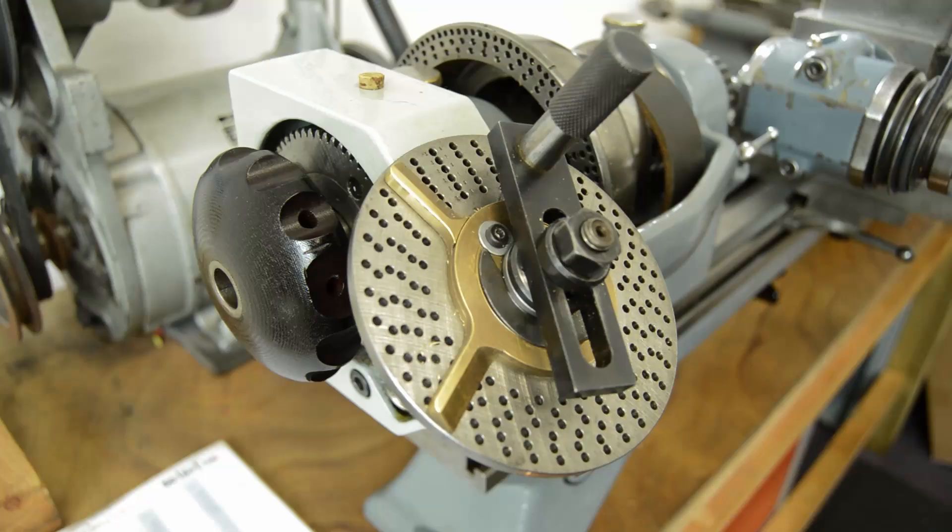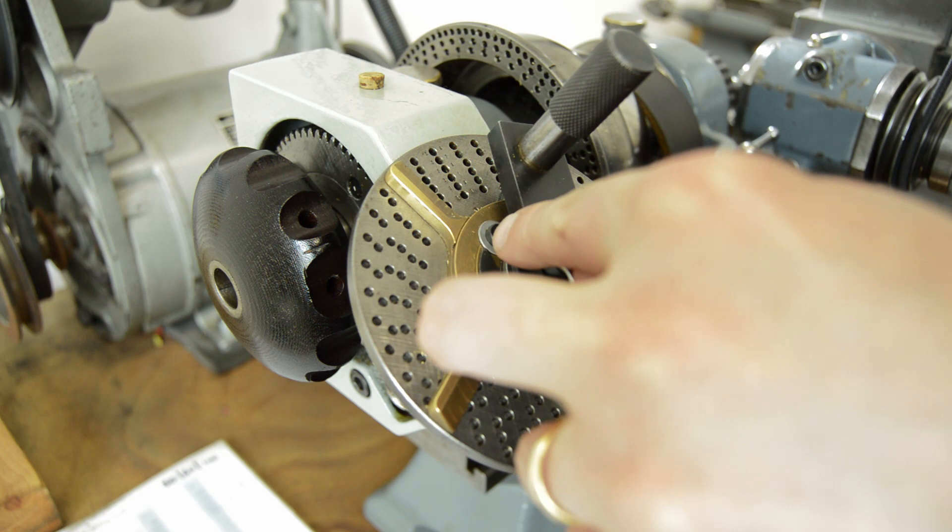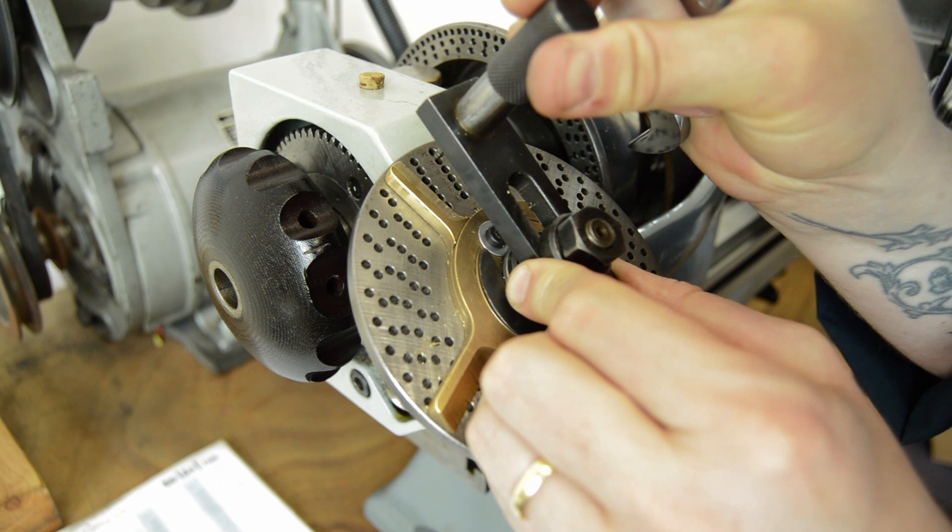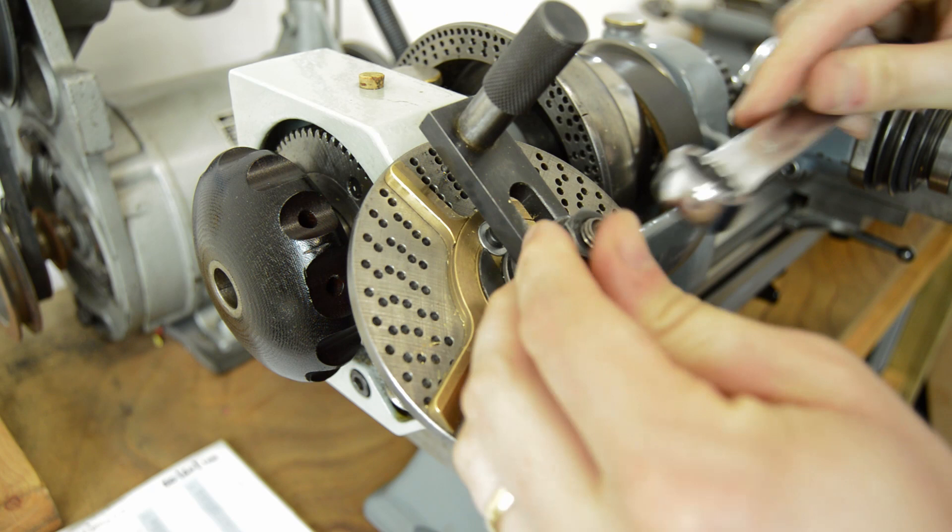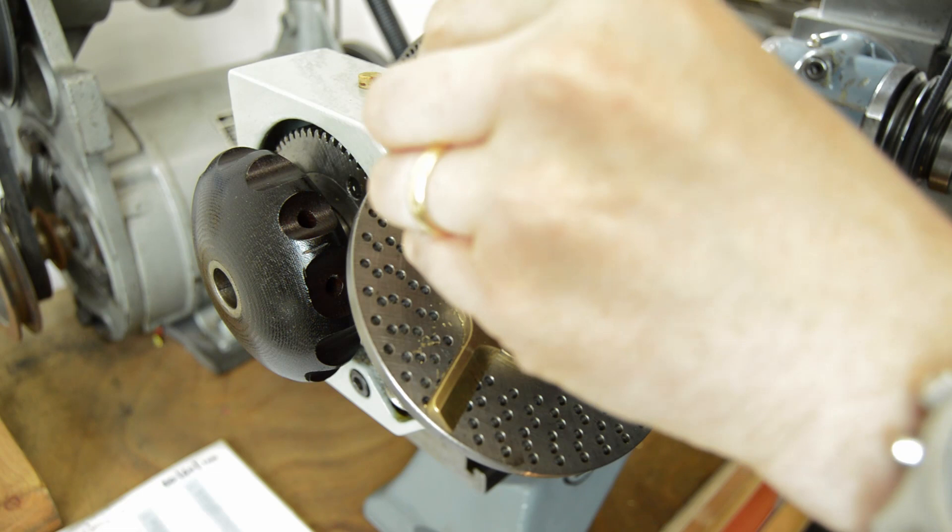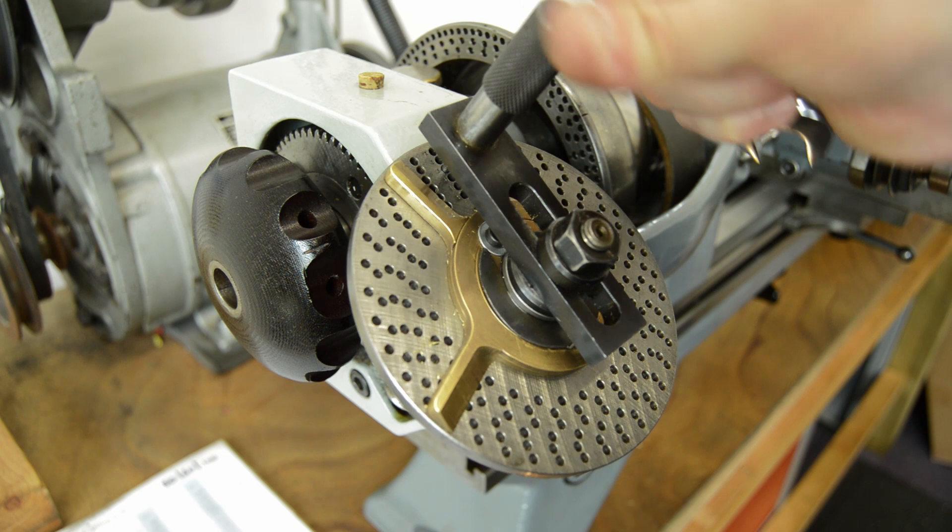All we need to do is set this so that it's indexing in the 32 hole division part of the disc. I've literally just undone the nut, moved it on the slide, made sure it's indexing in the 32 hole ring and tightened it up again.